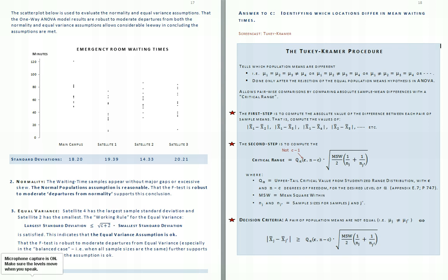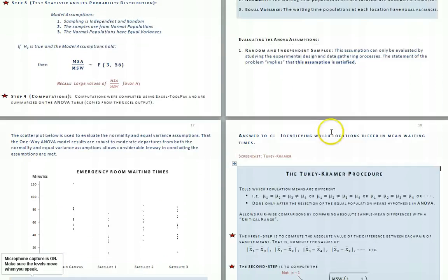There are three steps. In the first step, we compute the absolute value of the differences between each pair of sample means. So, we could go to the ANOVA output.